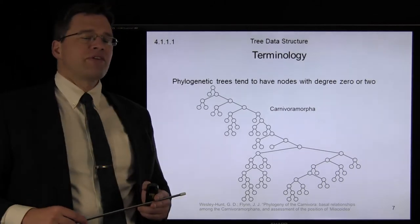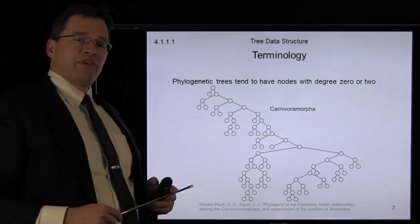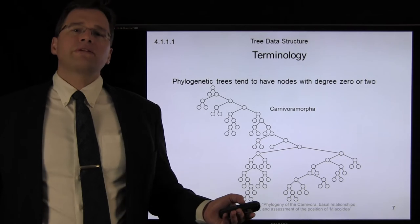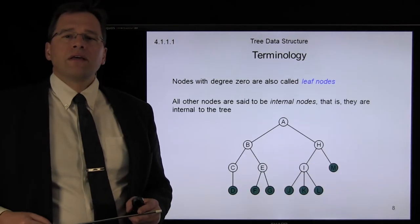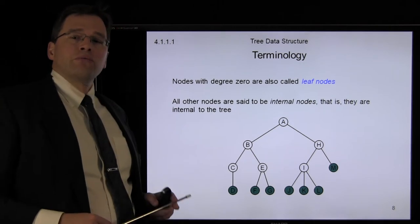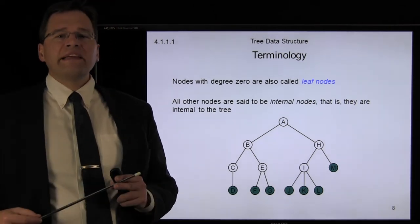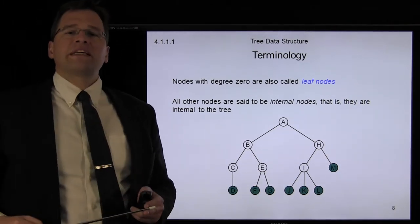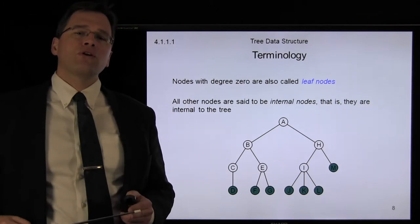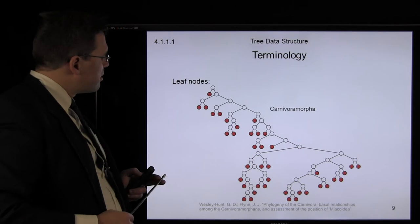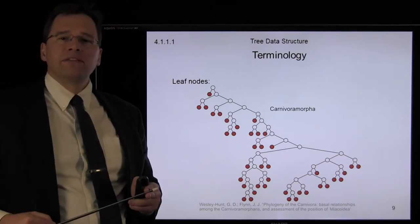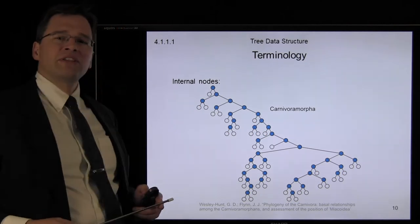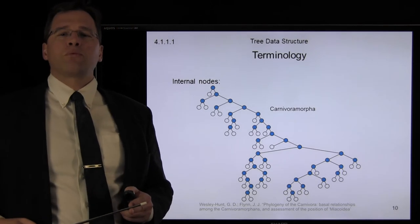Here, we have a phylogenetic tree of carnivoromorpha. In this case, most nodes will have either two children or zero children. A node that has degree zero, or has no children, is said to be a leaf node. So, these are the leaf nodes in this particular tree. Any other node within the tree is said to be internal to the tree, or an internal node. In the phylogenetic tree, these are all of the leaf nodes. The balance must be, by definition, internal nodes — they have at least one child.